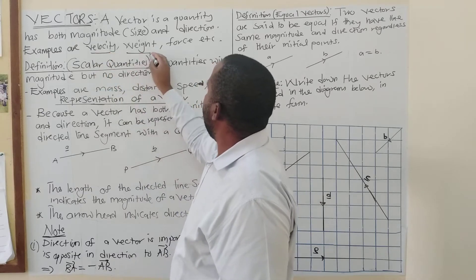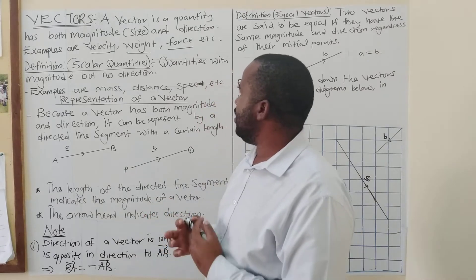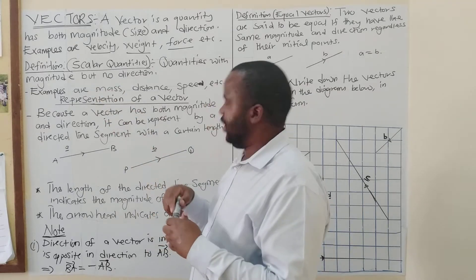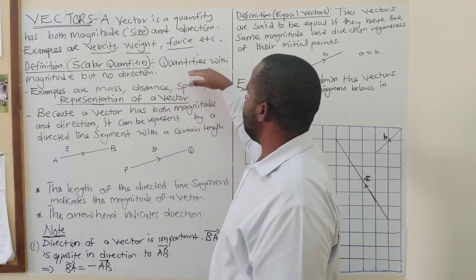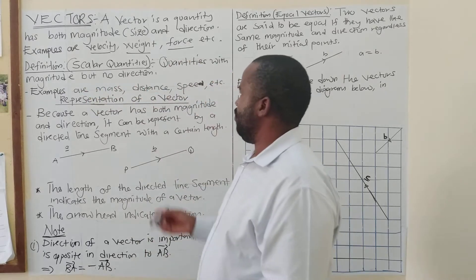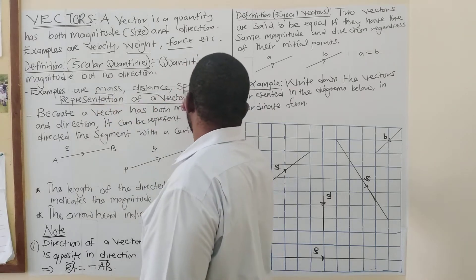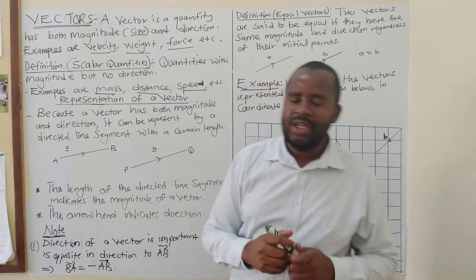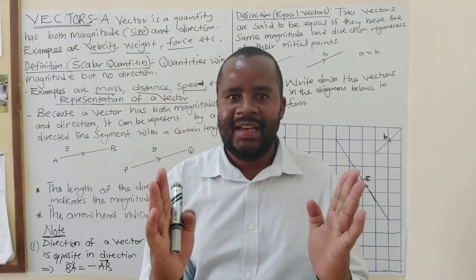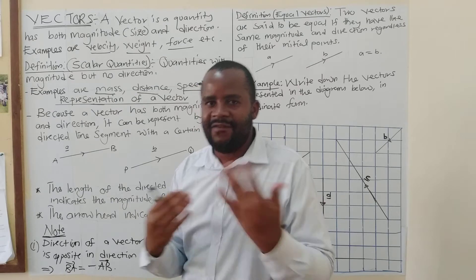Good examples of vectors are velocity, weight, and force. However, if a quantity only has size but no direction, that quantity is a scalar quantity. Examples of scalars are mass, distance, and speed.